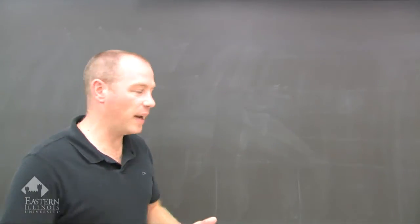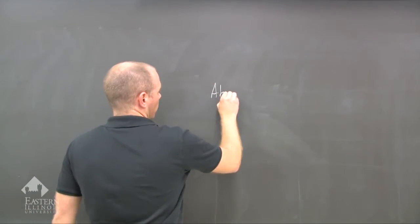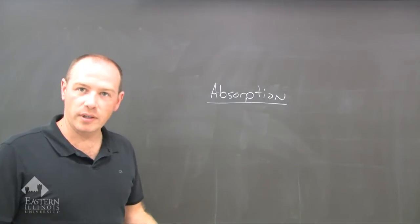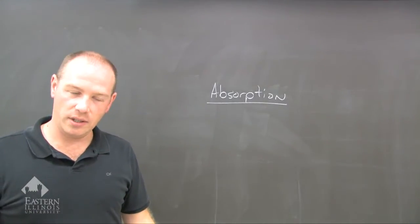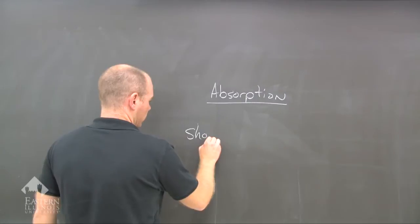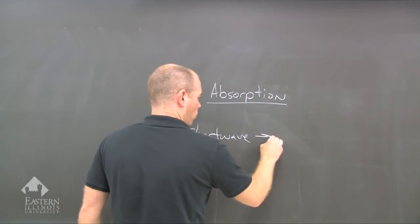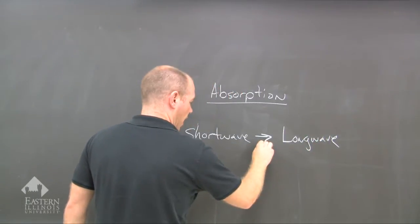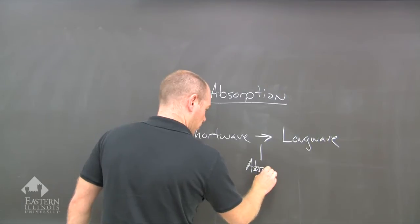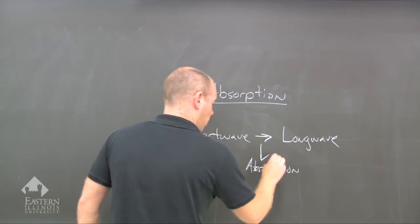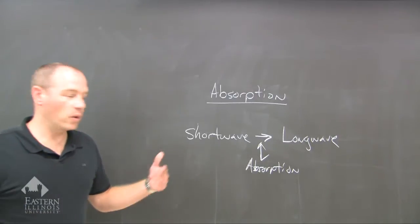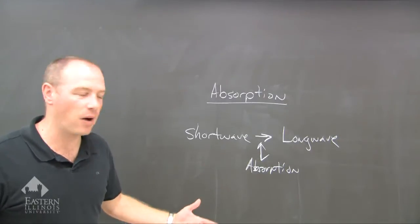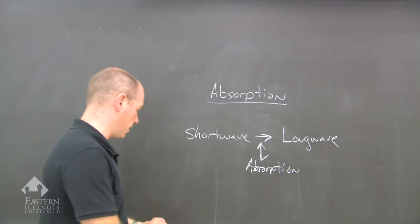So we have to have a process, and that process is absorption. Energy is absorbed, therefore it is changed. So if we go from short wave to long wave, we must have absorption. In other words, in order to get this short wave to change, to become less powerful, it's got to be absorbed. Some of it's got to be absorbed.